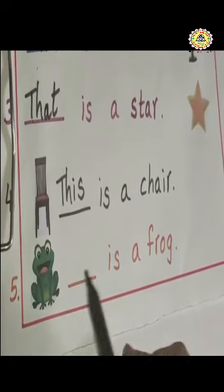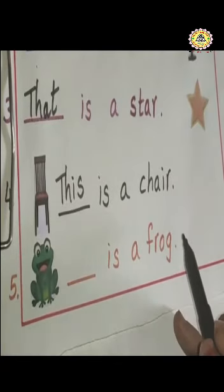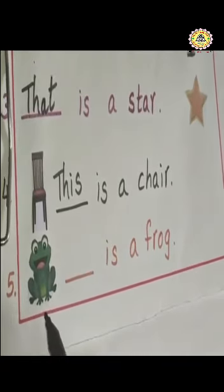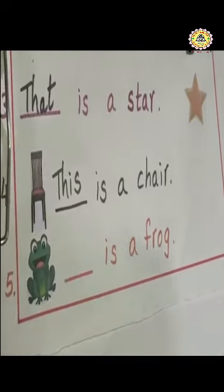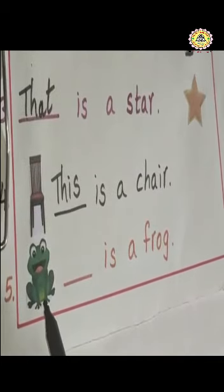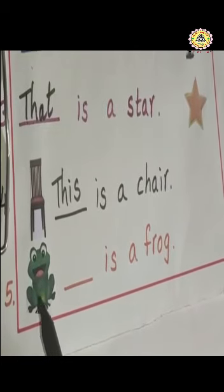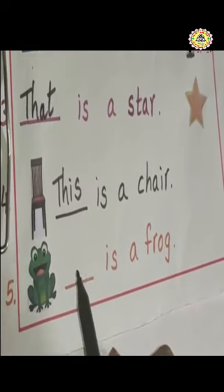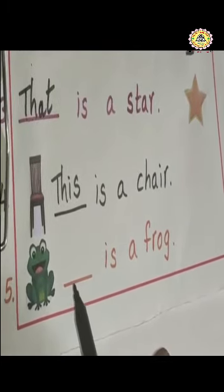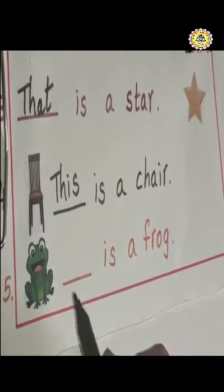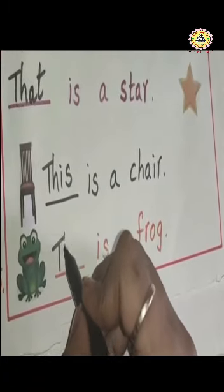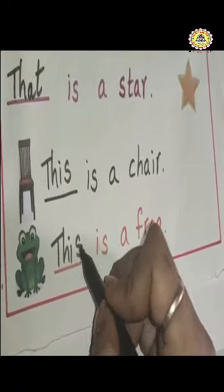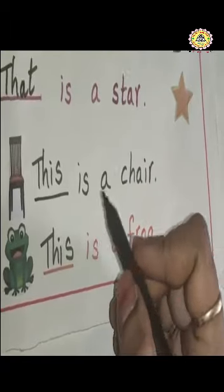Frog — dash is a frog. Observe this frog. Is it near or far? Yes, near. Near means what we have to write here? Tell me, children. This. Very good. T-H-I-S. This.